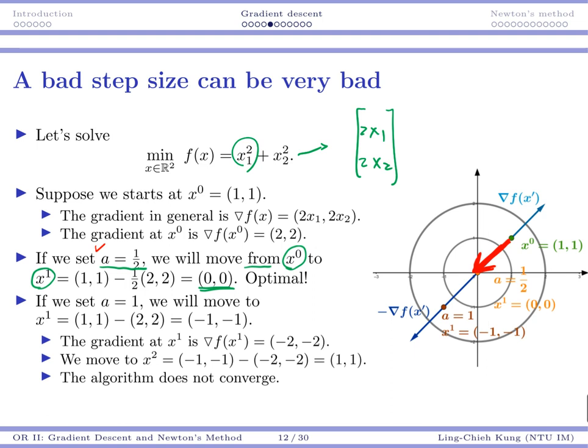But on the contrary, if we set a to be 1, then what we will do is that we will move from (1,1) to (1,1) minus (2,2), which is (-1,-1). So the gradient would be pretty much the opposite direction. And then we will do it again and go back to (1,1). If your step size is fixed and it's always 1, then in this particular example, you will move back and forth from x0, x1, x0, and x1, and so on and so on.